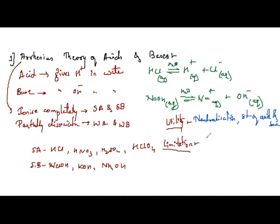The limitations of Arrhenius theory: first, for a substance to behave as an acid or a base, water was required — presence of water is absolutely necessary. So dry HCl is not considered an acid according to Arrhenius theory; it must be mixed with water to become an acid.